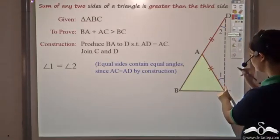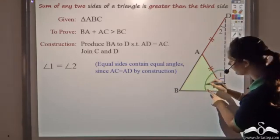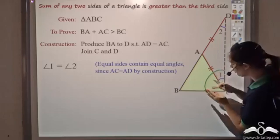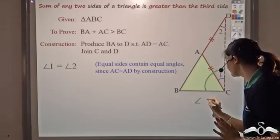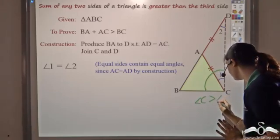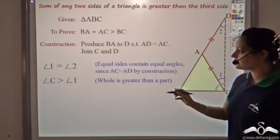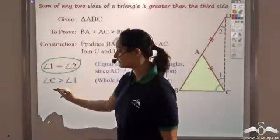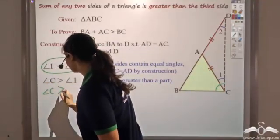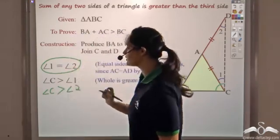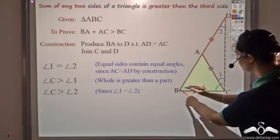Now since angle 1 equals angle 2, consider angle C — the full angle at C. Angle 1 is just a small part of angle C, so angle C is greater than angle 1. Since angle 1 equals angle 2, we can also say that angle C is greater than angle 2.